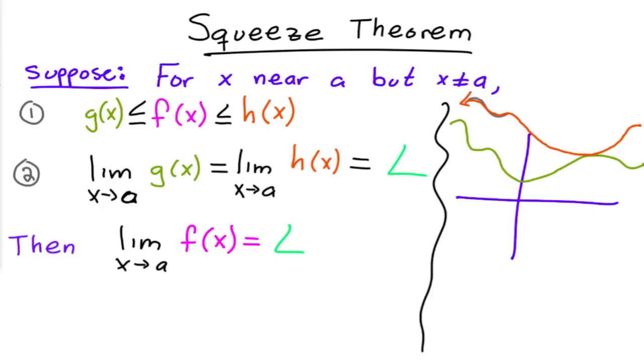Let's say that my value a is right here. What we're saying here is that f of x is always in between the two. Since it's always in between, it has to go through right there.